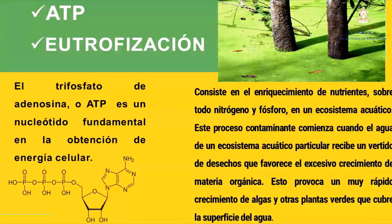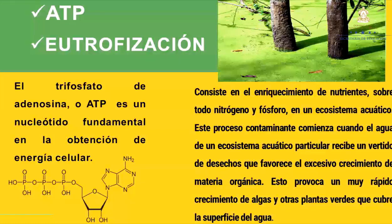ATP y eutrofización. El ATP, trifosfato de adenosina, es un nucleótido fundamental en la obtención de energía celular. Eutrofización: consiste en el enriquecimiento de nutrientes, sobre todo nitrógeno y fósforo, en un ecosistema acuático. Este proceso contaminante comienza cuando el agua de un ecosistema acuático particular recibe un vertido de desecho que favorece el excesivo crecimiento de materia orgánica, provocando un muy rápido crecimiento de algas y otras plantas verdes que cubren la superficie del agua.